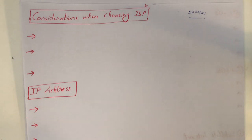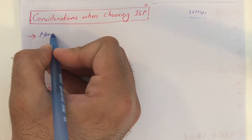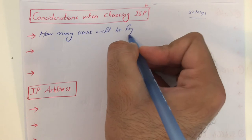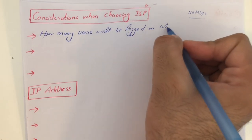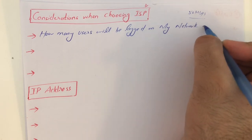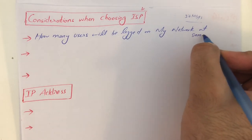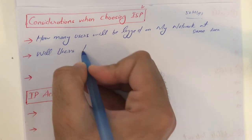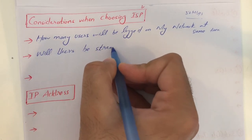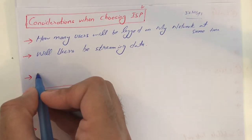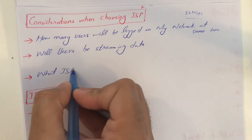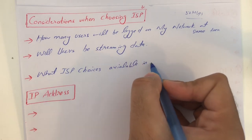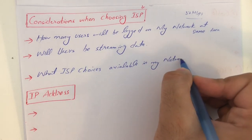You need to make three considerations before choosing an ISP. First, you have the right to ask how many users will be logged on to your network at the same time. Second, will users be streaming data, like watching Netflix? Third, what ISP choices are available in your area? Then you can pick any ISP.